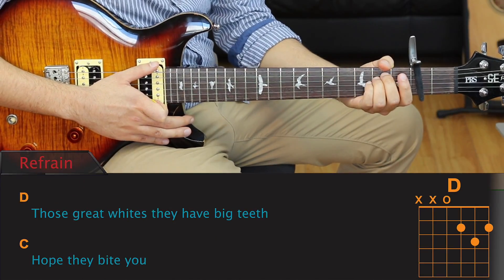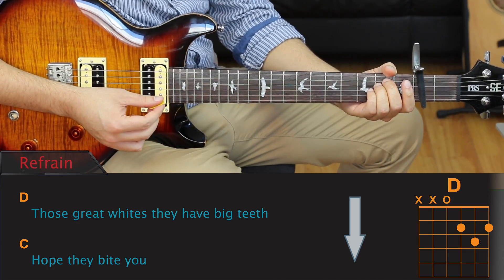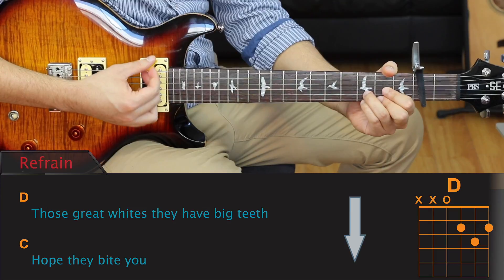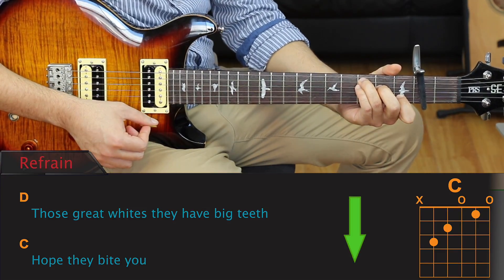The next part of the song is the refrain. Just like in the verse, we're going to be using three chords with the same downward strumming pattern, but this time we'll be playing D, C, and E minor.